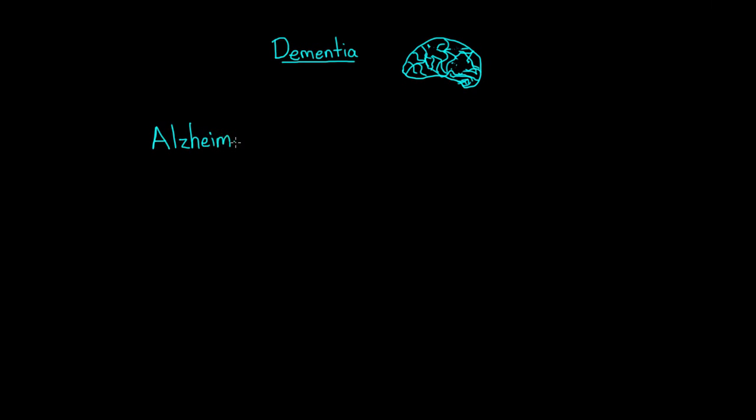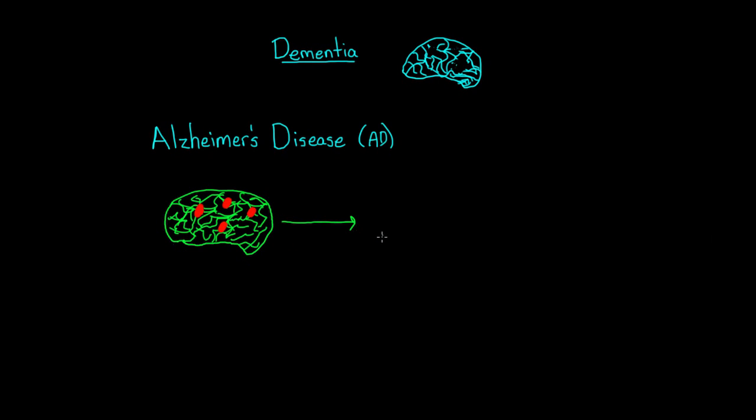The most common form of dementia is Alzheimer's disease, or AD. Now the exact cause of AD is still unknown, but we do know that in people with AD, their neurons die off over time. As people with AD lose their neurons and synapses, their cerebral cortex shrinks in size.